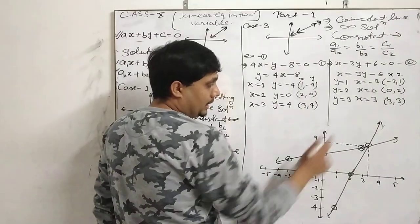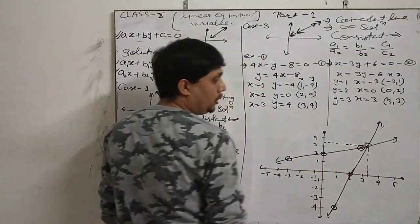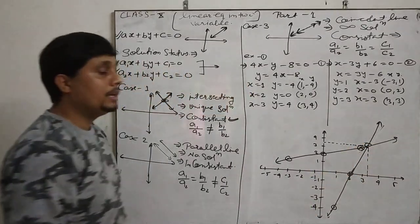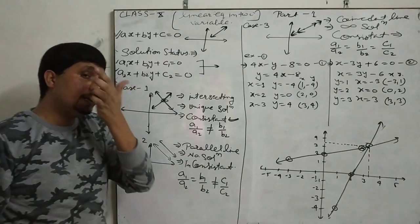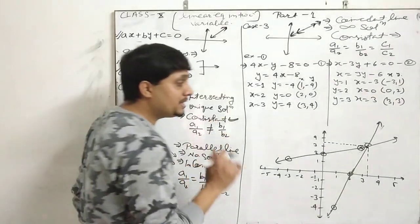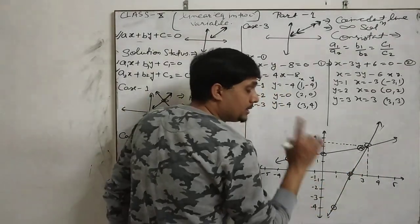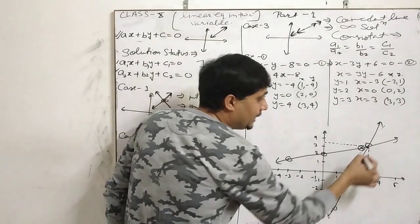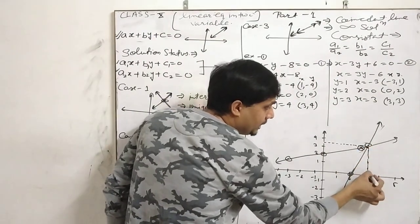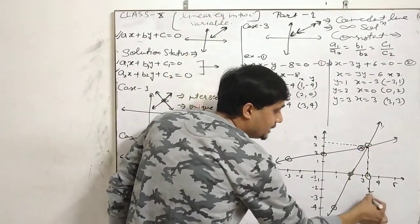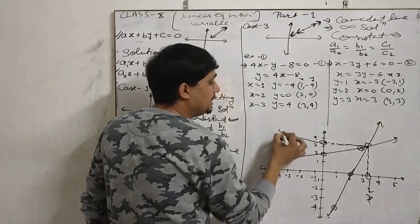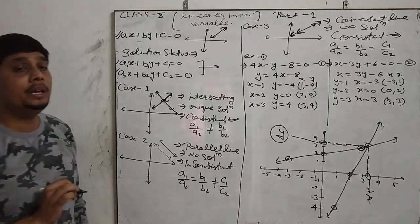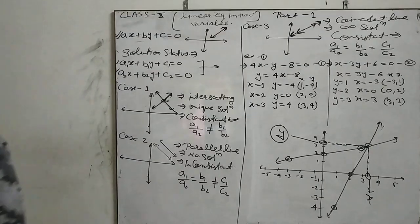When I have the graph plotted, we can see that the two lines are intersecting, which means there is a unique solution. On the x-axis we have x values and on the y-axis we have y values. This is how we denote it on the graph.